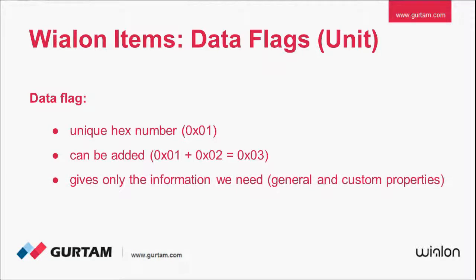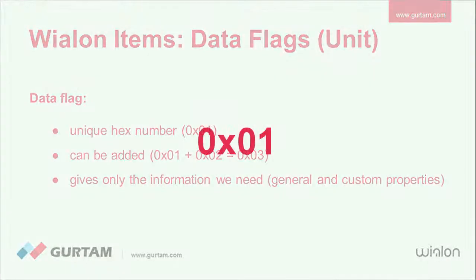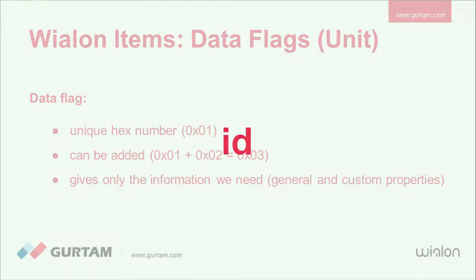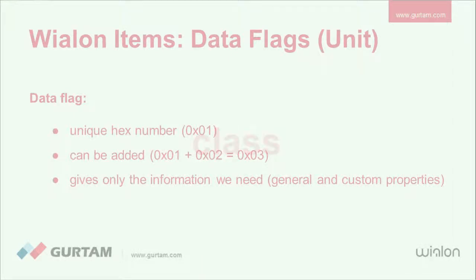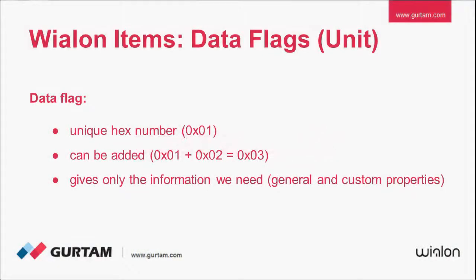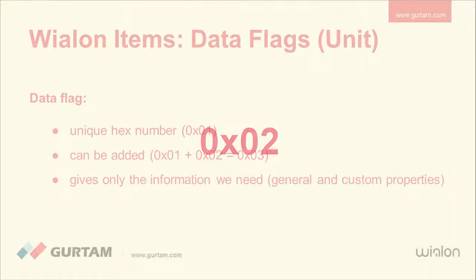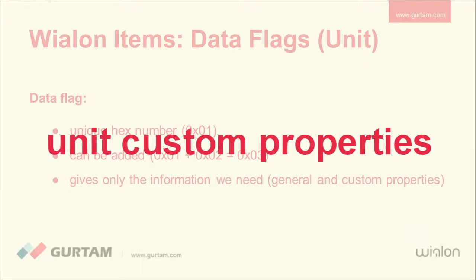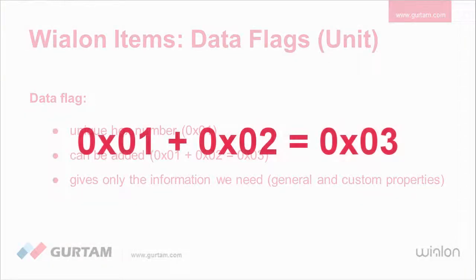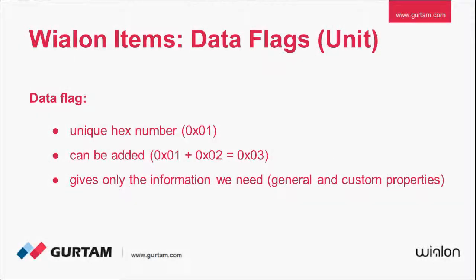For example, unit base or custom properties data flag 1 contains the following information: ID, name, class, and user access. Custom property flag 2 contains an object property with all unit's custom properties. If we need both of these flags, we just need to add them: 1 plus 2 equals 3. This flag 3 gives us both unit general and unit custom properties.